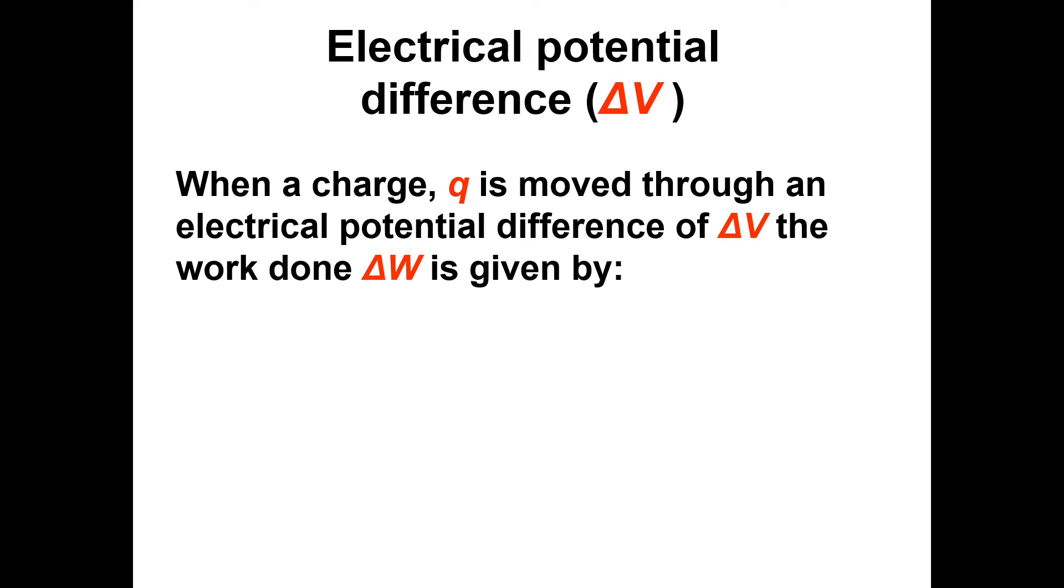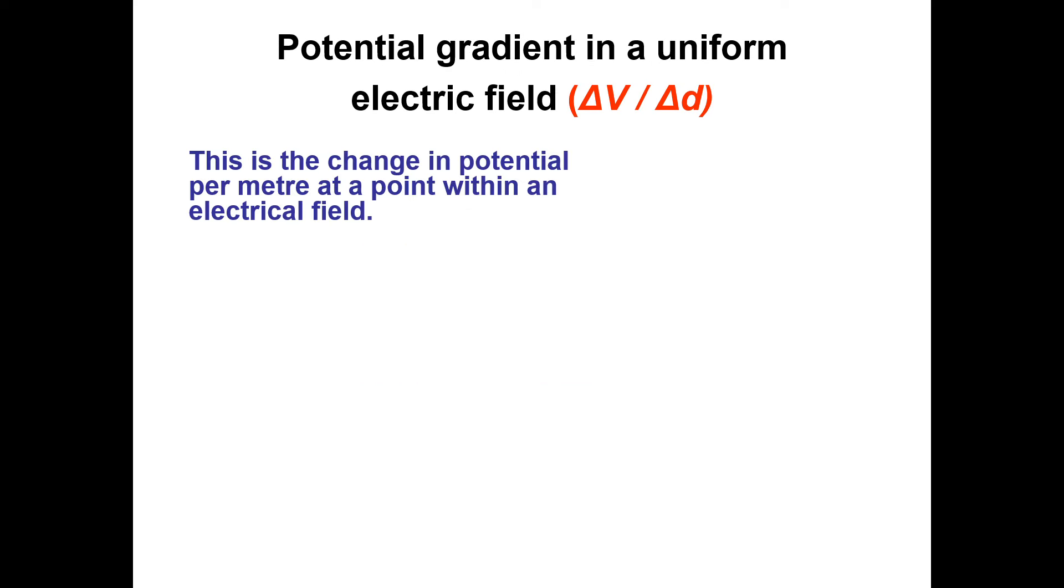Potential difference then, when charge Q is moved through electric potential difference delta V, the work done given by work done equals Q delta V. Really, that's the electric potential energy of the system.